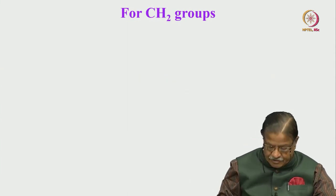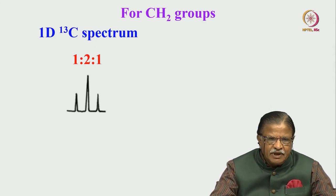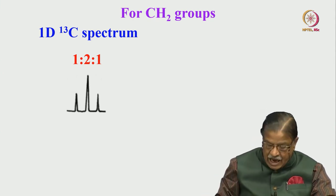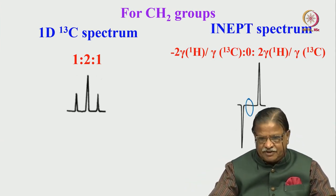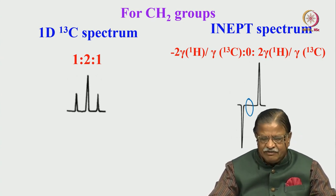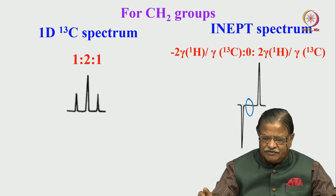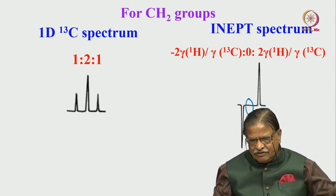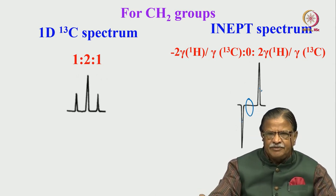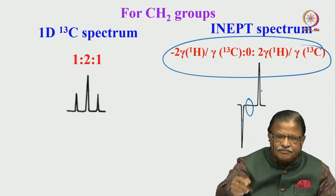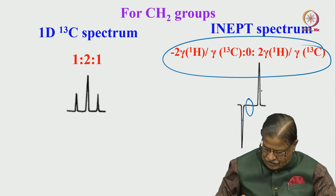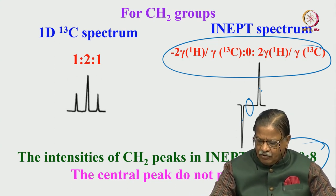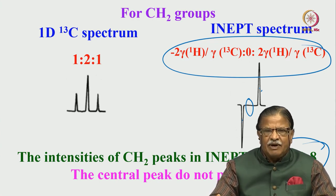For CH2 groups, the signal intensity will be like this. The normal one-dimensional carbon-13 signal is in the ratio 1:2:1. In the INEPT experiment, the central peak does not precess and there is no transfer of magnetization for it. Only the outer components, which are in antiphase, give a signal. As I told you, the transfer of magnetization takes from antiphase to antiphase. The intensity of the CH2 peaks are minus 8, 0, and plus 8 — outer components have minus 8 and plus 8 intensity.